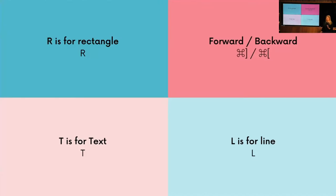Some handy keyboard shortcuts to save you time when finishing your pitch on the run: hit R for rectangle, T for text, L for line, and Command+Brackets to move elements forward and back.